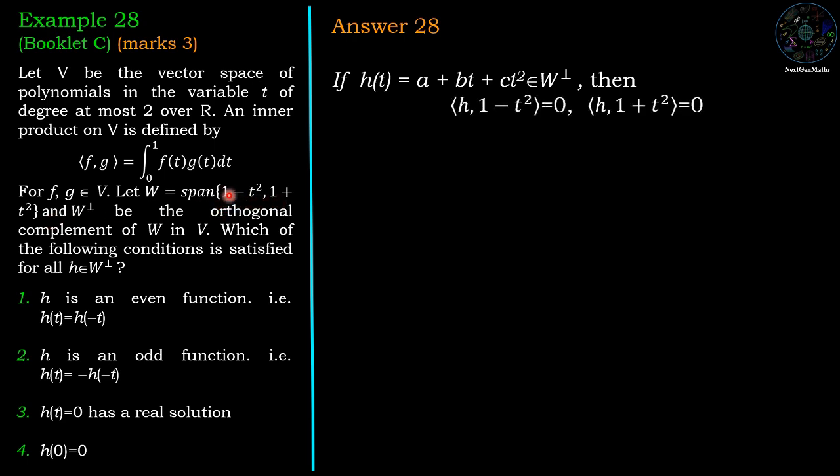And hence we have inner product h with 1 minus t squared is 0, and inner product h with 1 plus t squared is 0.